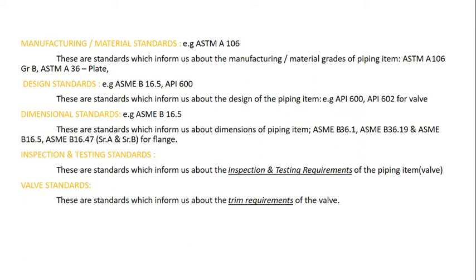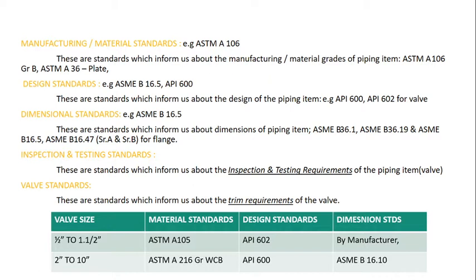For design standards, ASME B16.5 and API 600. If you look at a flange, you follow ASME B16.5 for the design. For example, a 1.5-inch flange would be designed and fabricated following B16.5, which is a dimensional standard.